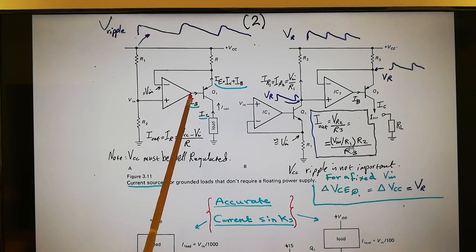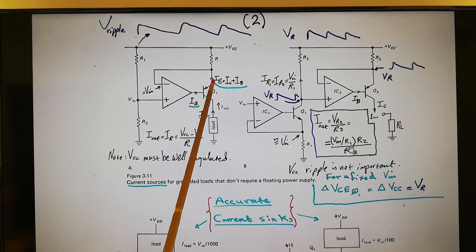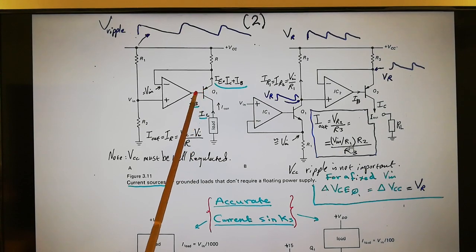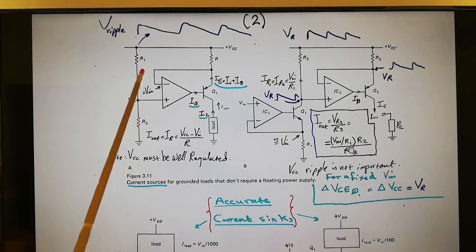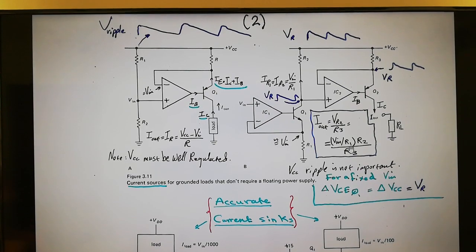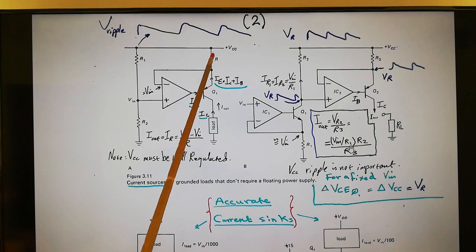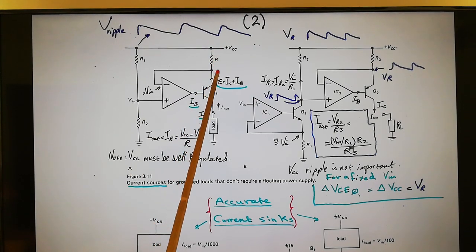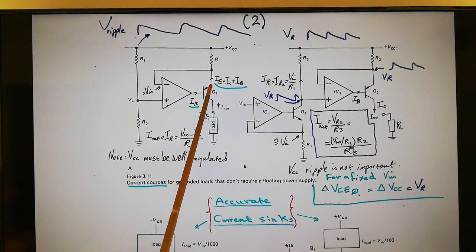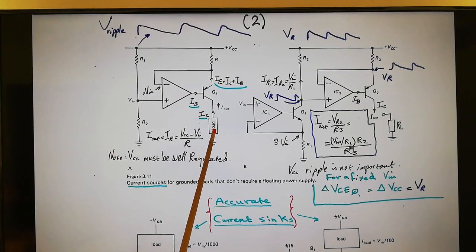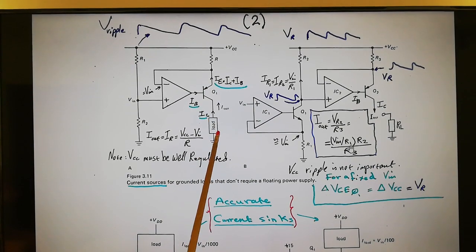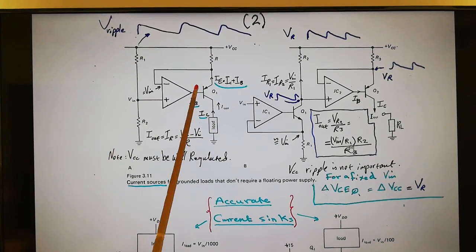The op-amp will do whatever it takes — regardless of obstacles like resistors, transistors, or diodes — within its compliance range, to make the non-inverting input equal the inverting input. So VR1 equals the voltage across R, which sets the current. The same current through R equals IE, and IE splits: IB is supplied by the op-amp, and IC is supplied to the load.